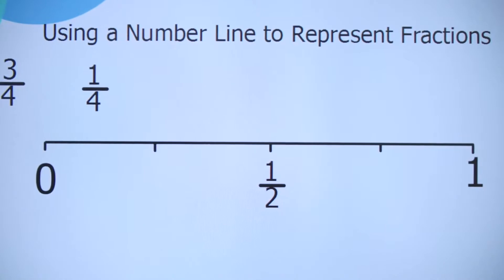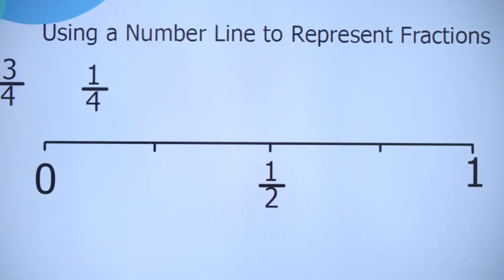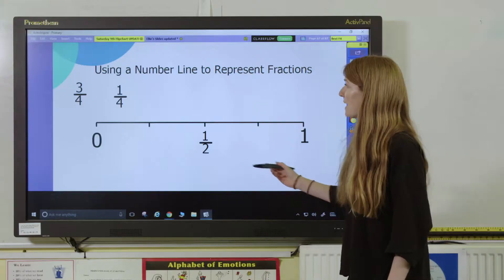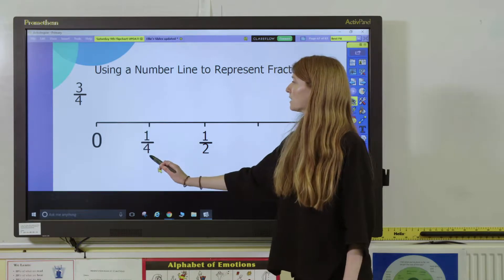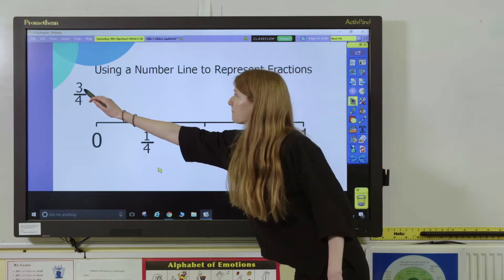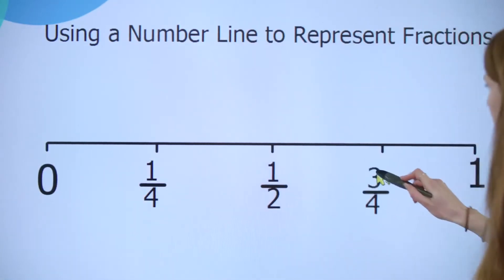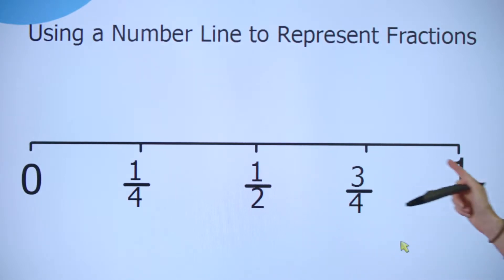So in this first example you might ask pupils to place a quarter and three quarters in the correct places on the number line and that would really help them to see that a quarter comes halfway between a half and zero and similarly three quarters comes halfway between a half and one.